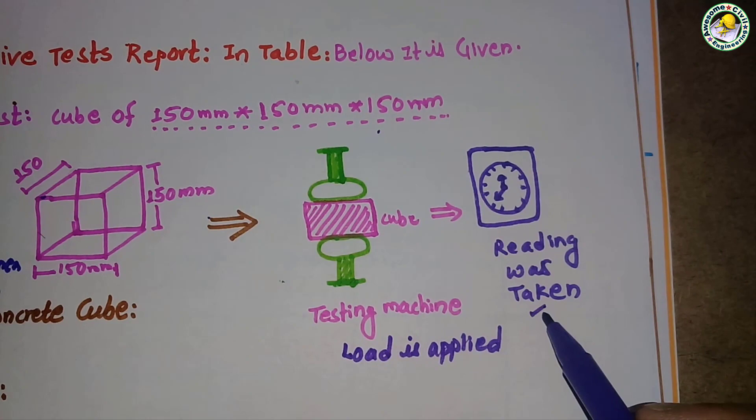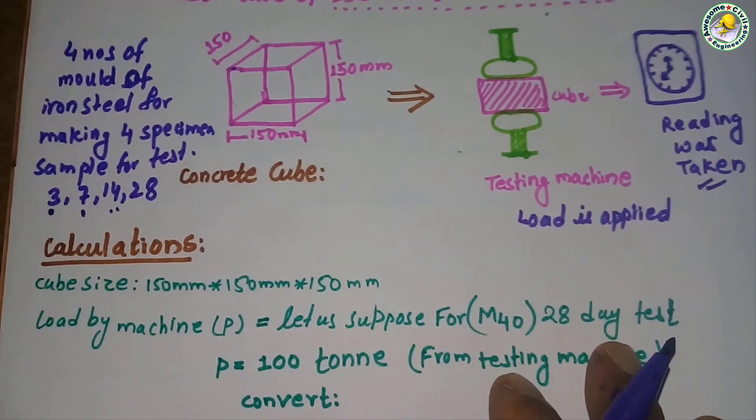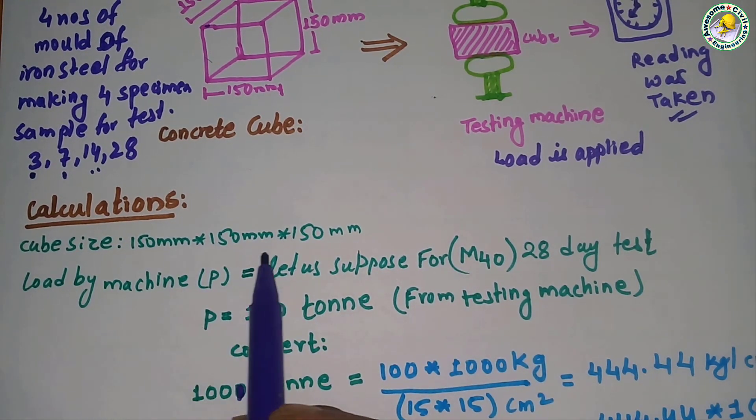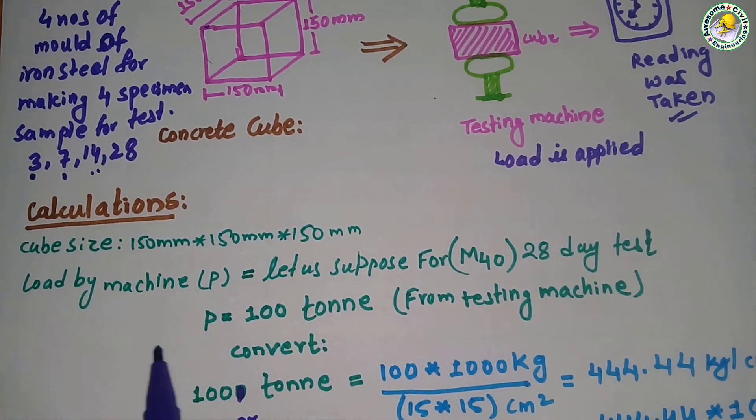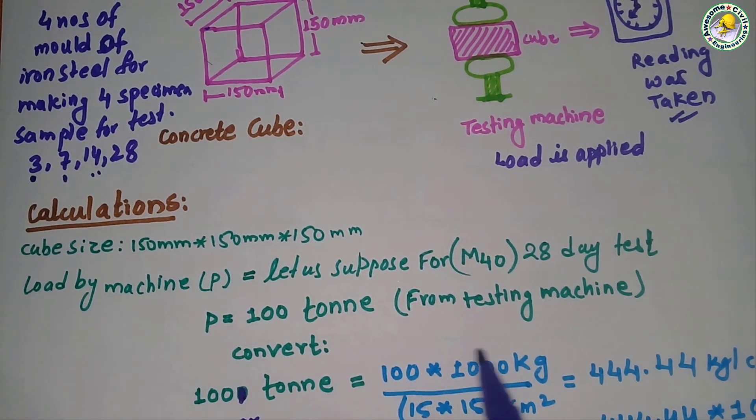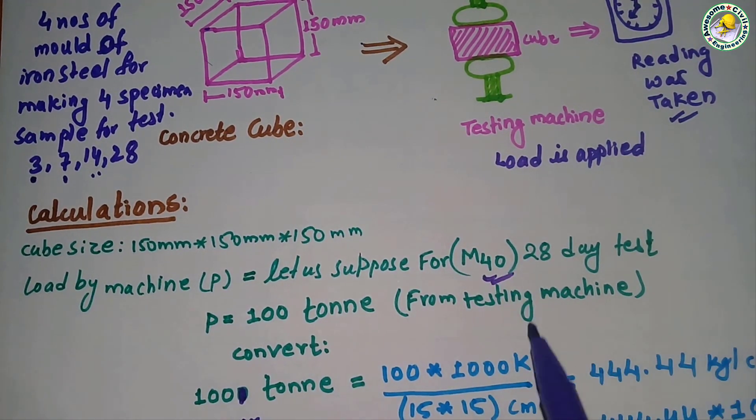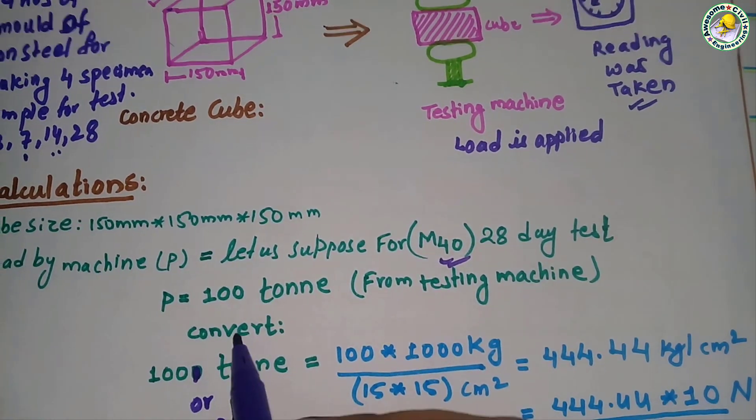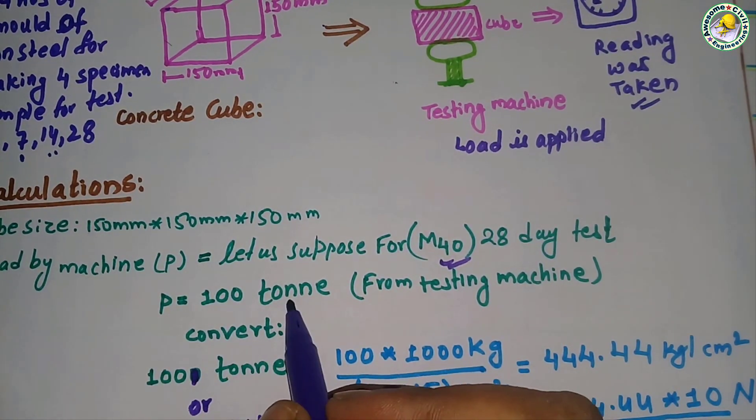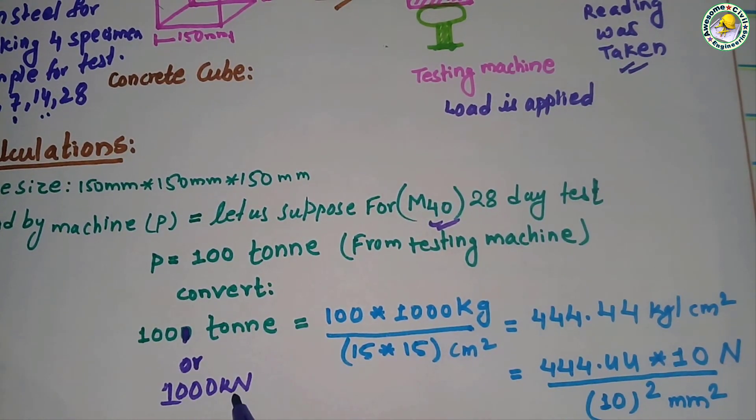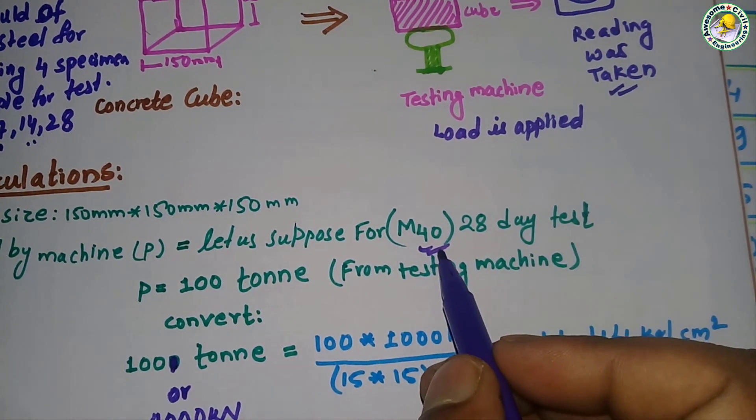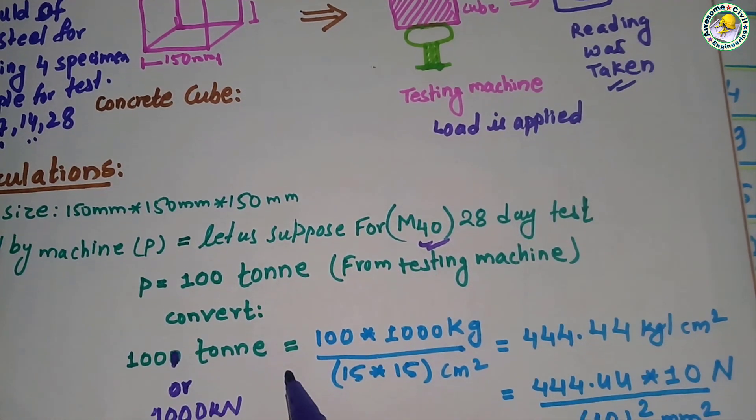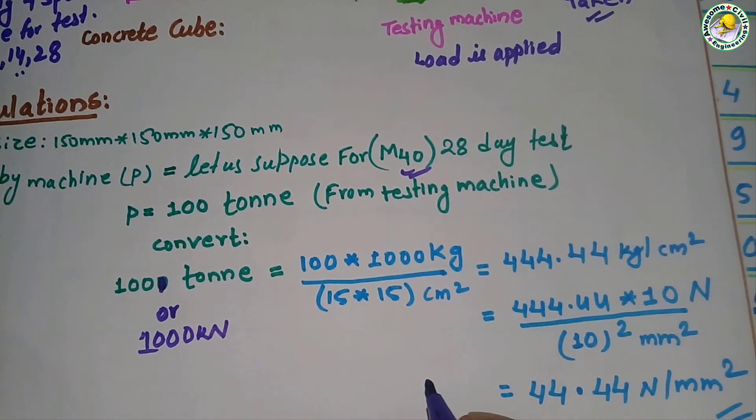Now for the calculations, cube size is 150mm × 150mm × 150mm. The load applied by the machine, let's take for M40 28-day test - the load applied by the machine is 100 ton, or simply you can say 1000 kilonewton for M40, and we are testing for 28 days test.